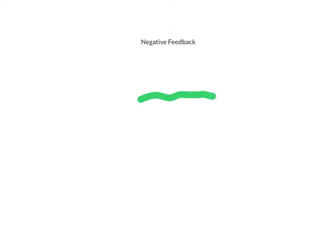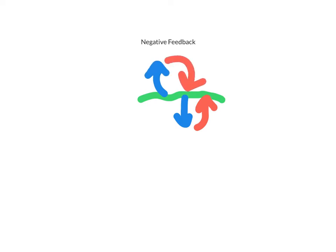So let's talk about negative feedback in general first. The concept of negative feedback is that we want to keep things in a particular balance. We have a particular variable, and if something causes it to go down a little bit, negative feedback will bring it back up. If it goes up a little bit, negative feedback will bring it back down again.